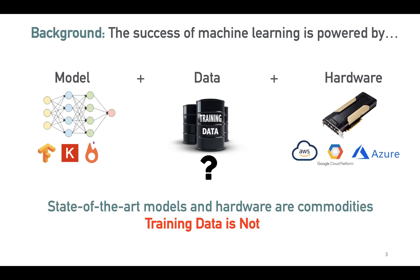Training data is critical to getting any machine learning pipeline and any machine learning application started. You might have access to the best model, you might have access to the best hardware, but if you don't have the data for your particular use case, you're going to be blocked at that very first step.